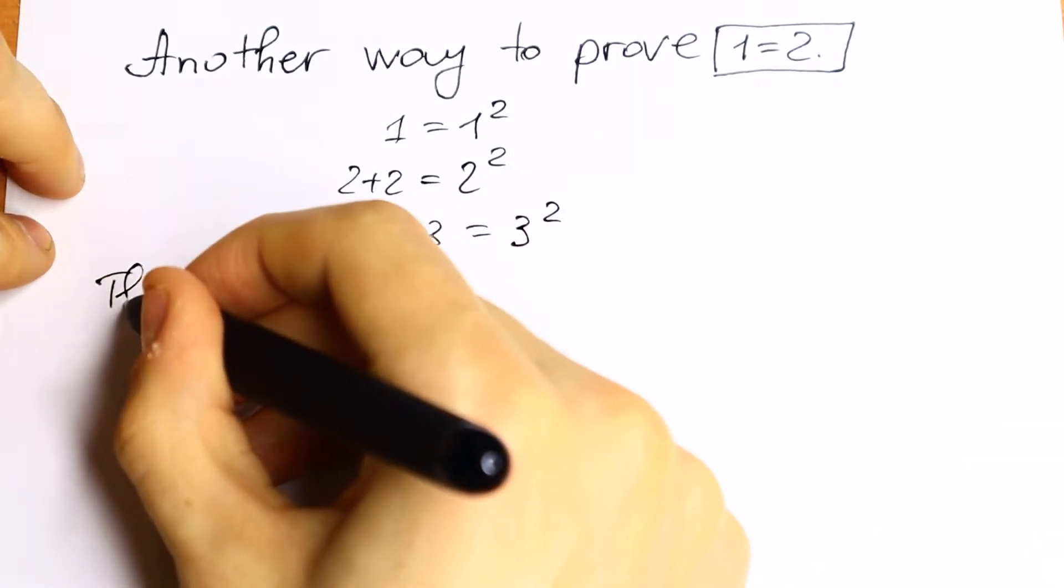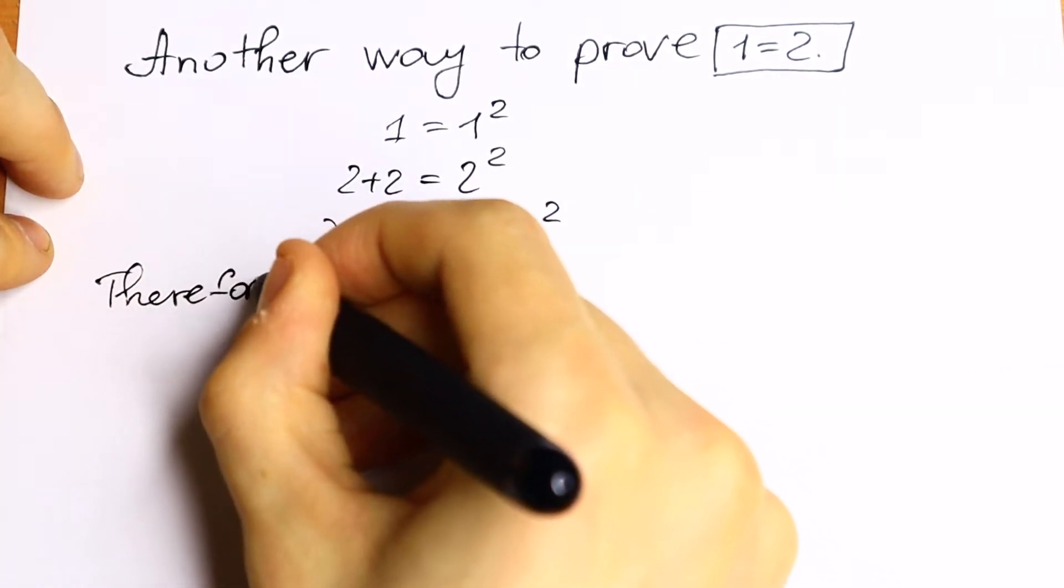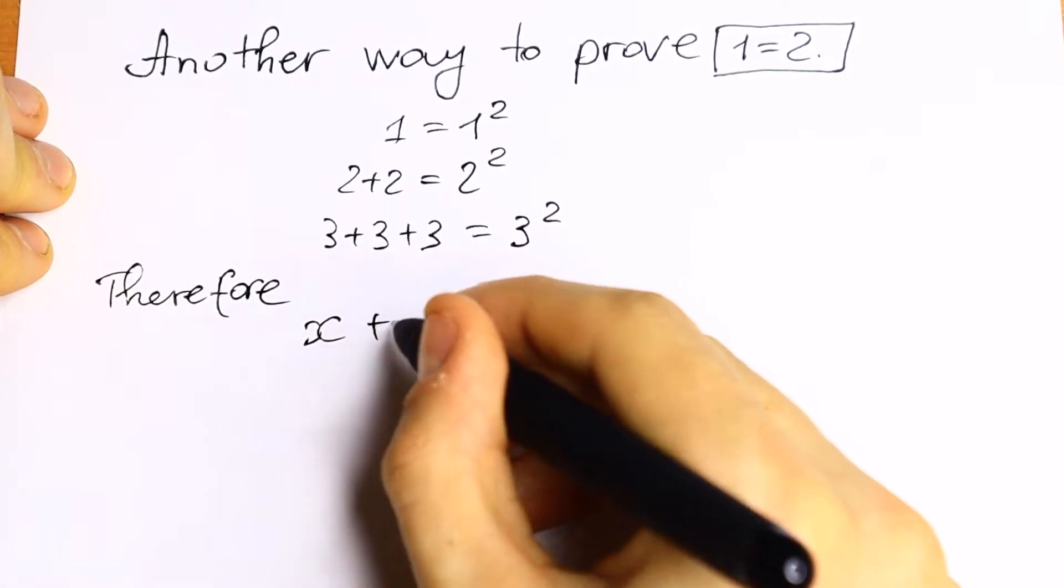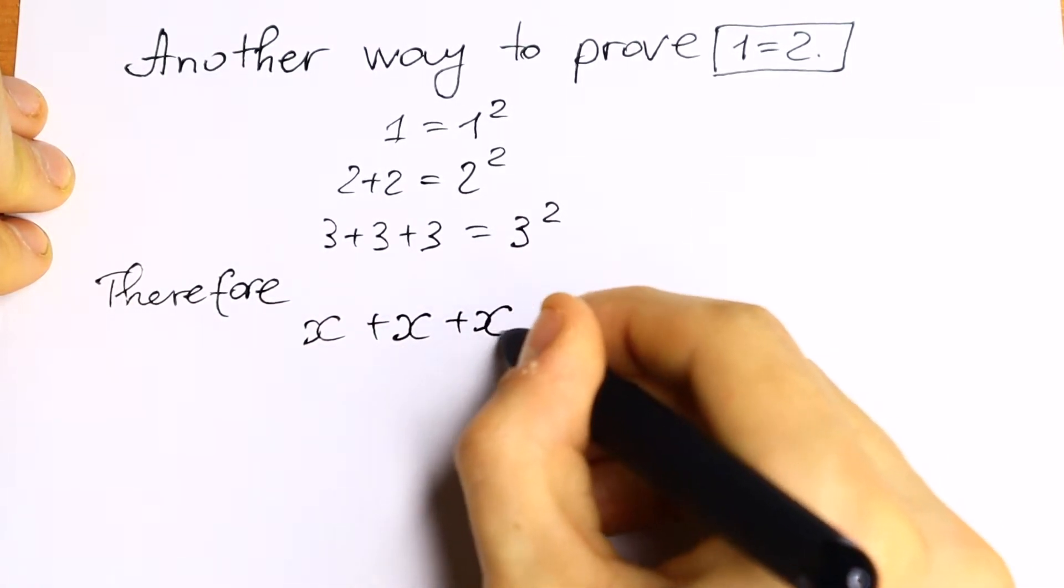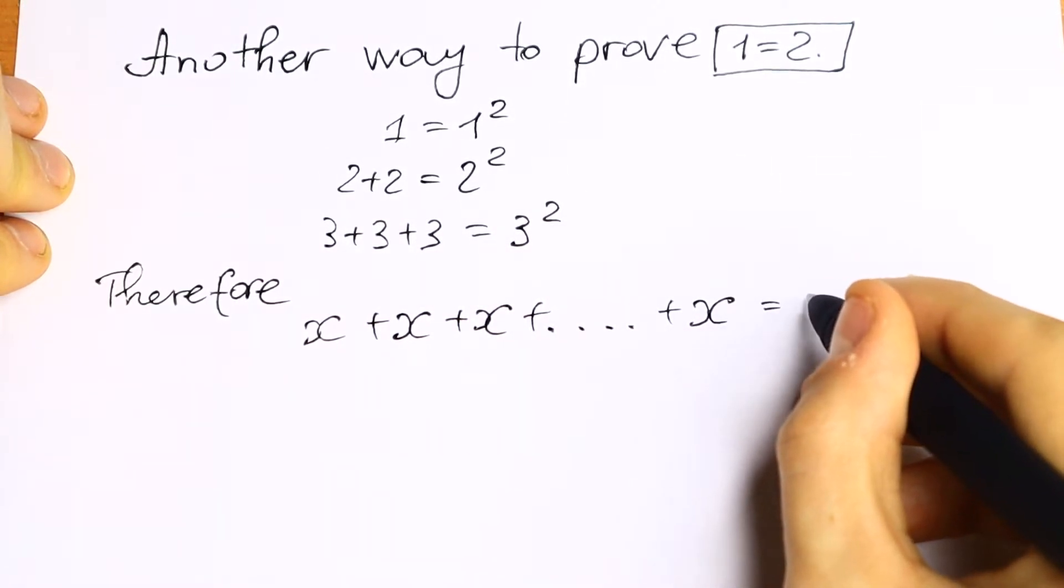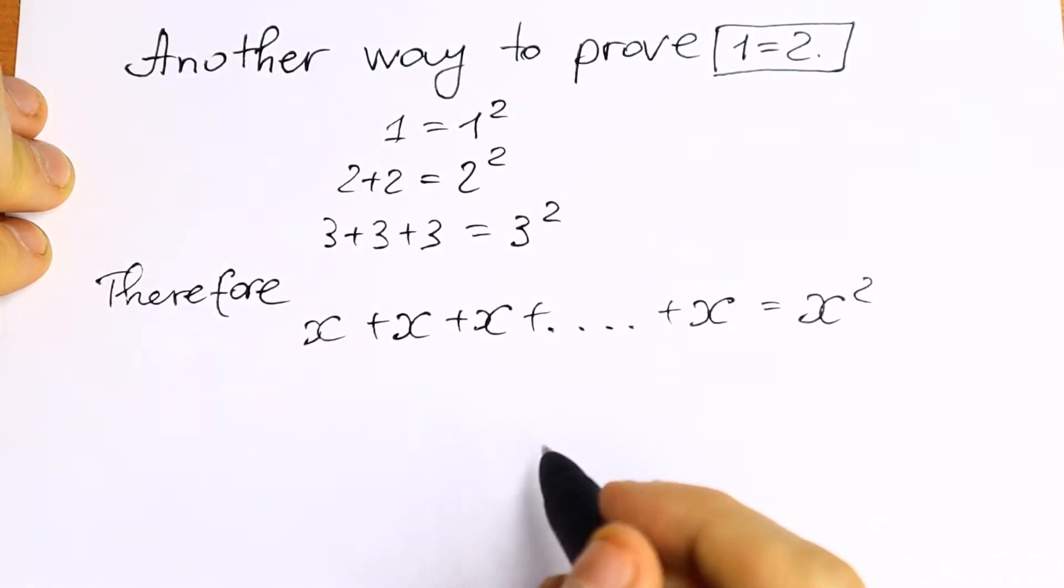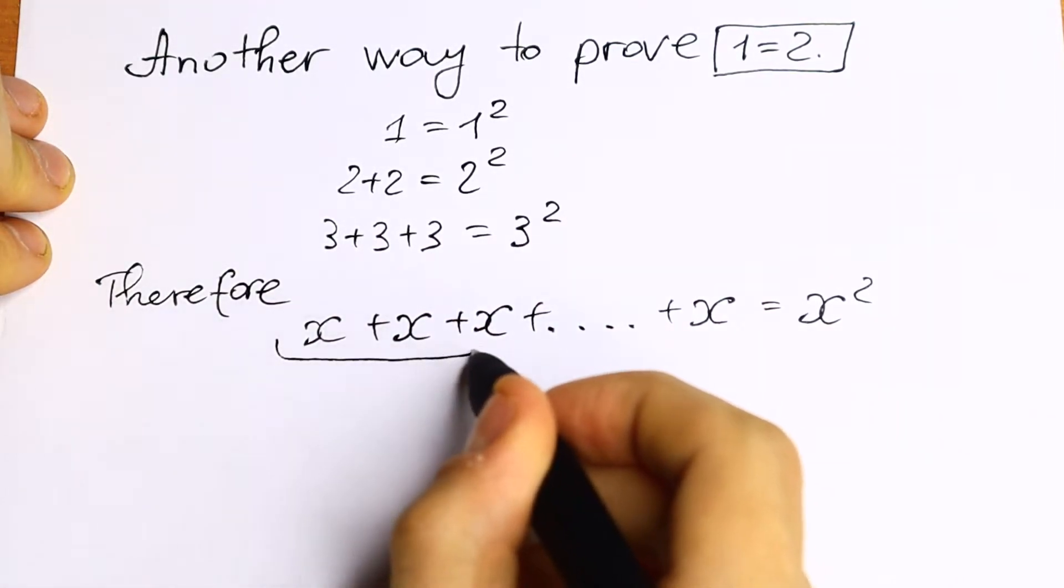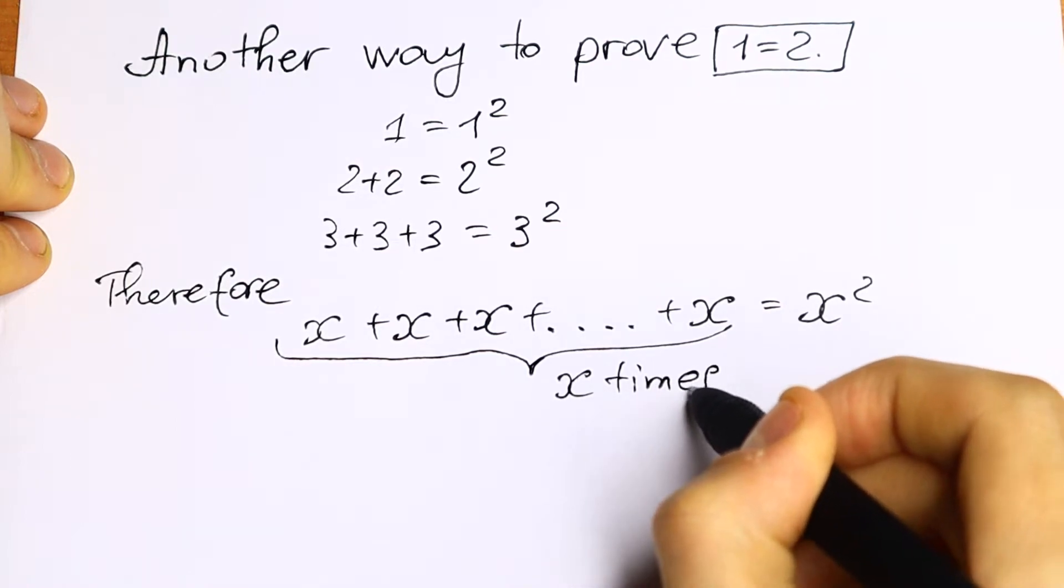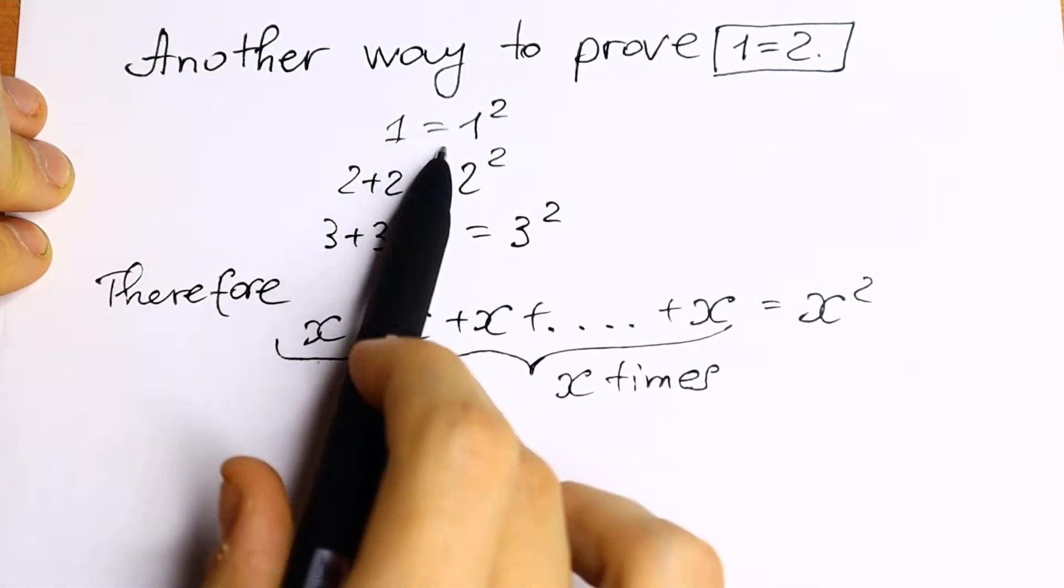So therefore the sum x plus x plus x and plus dot dot dot plus x equal to x square. So right here we will have x times, considering of course the following. This is correct.